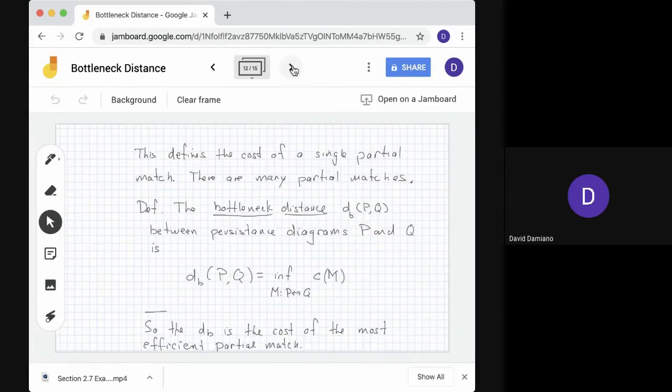From the cost functions, we can define a bottleneck distance. So if we have two diagrams, P and Q, we define the bottleneck distance d_B of PQ between persistence diagrams P and Q is the infimum over all M partial matchings between P and Q of CM, the cost. So d_B is the cost of the most efficient of the partial matches between them.